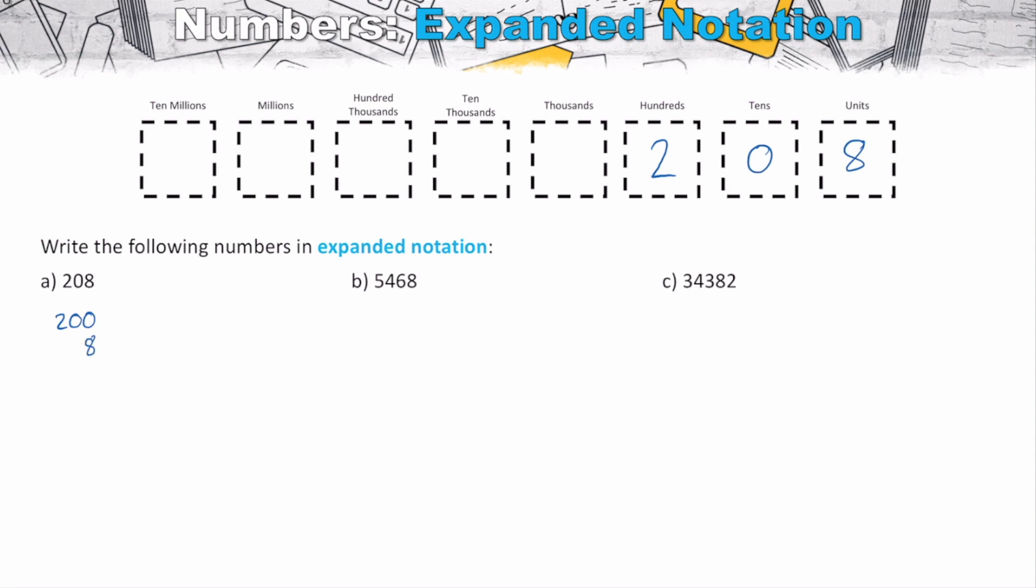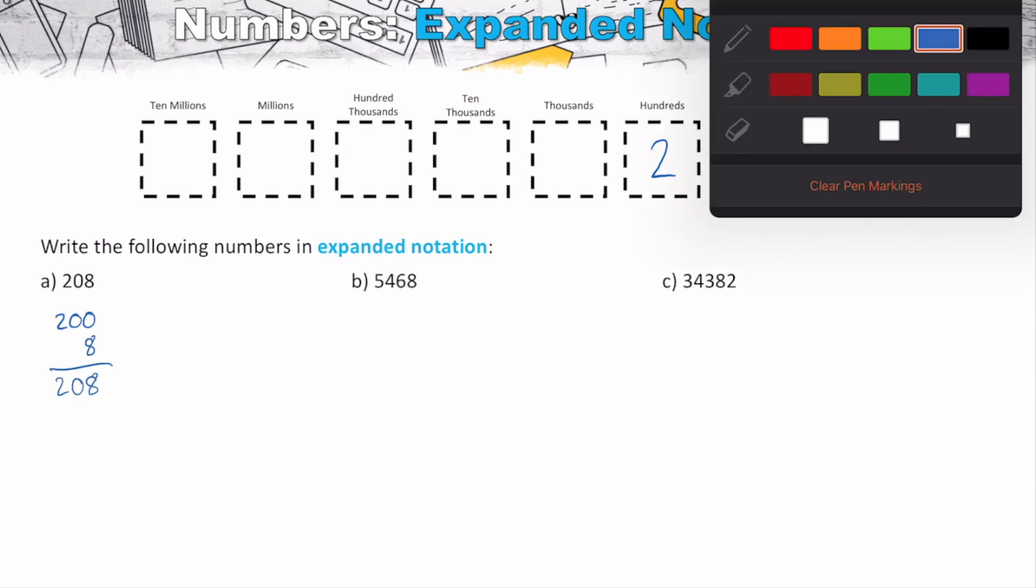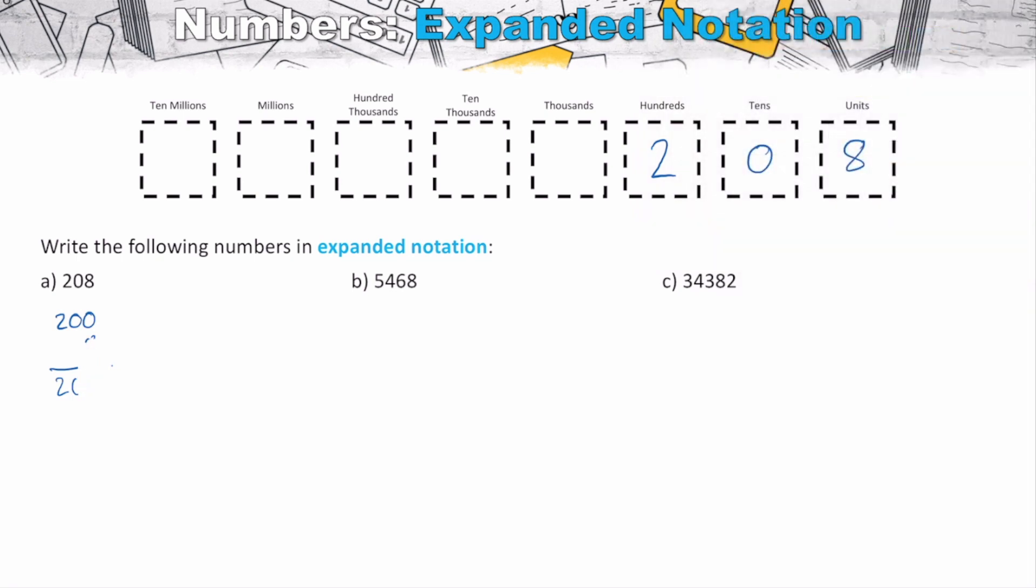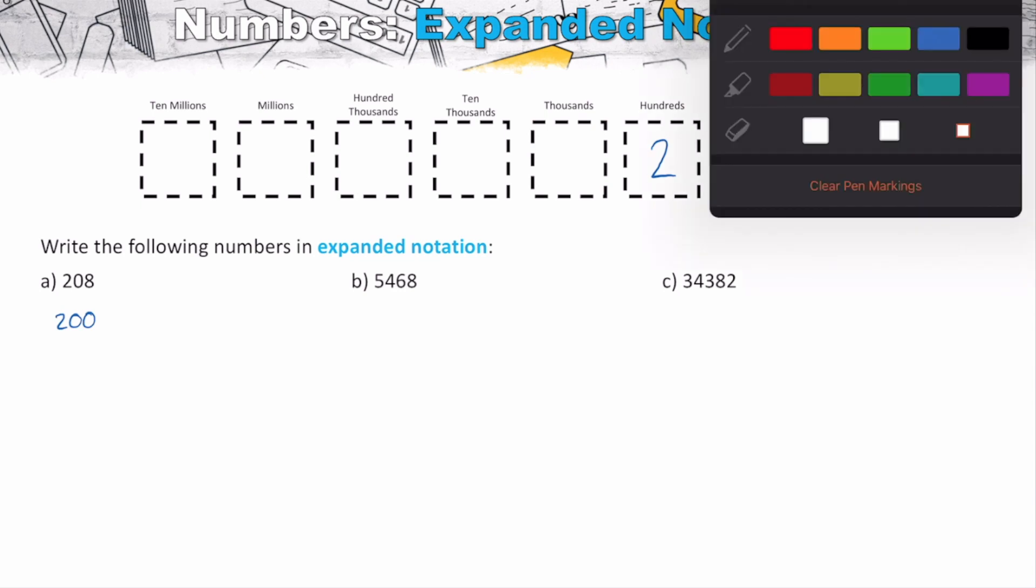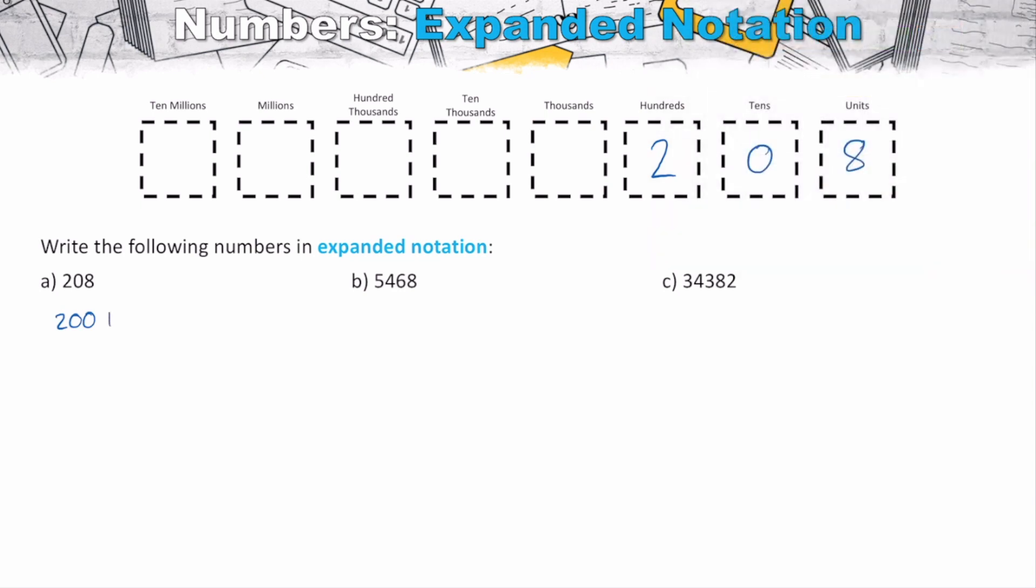So we've got eight units like this. And if I line it up in its place value column, we can see here that we can add these together, and this will give me 8, 0 and 2, which is what we're looking for. And essentially we've now broken it down into its parts. However, when we want to represent this in expanded notation, we're just writing it simply like this. We're writing it as a sum of its parts. So this is equal to 200 plus 8.